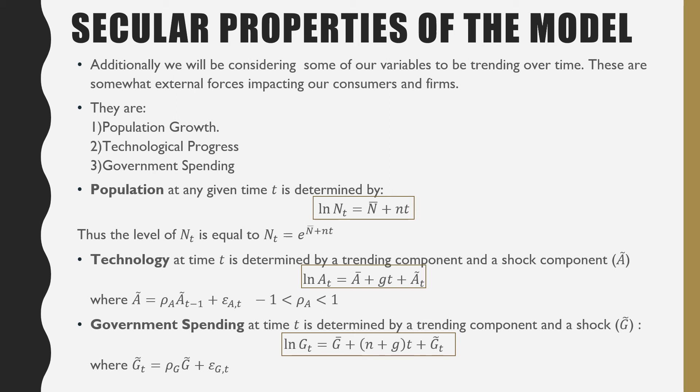Considering technology at time t, we have the same sort of thing. We have a trending component and a shock component. As we can see, we have Ā plus gt, that's our trending component, plus Ã_t. So g is our growth rate of technology.